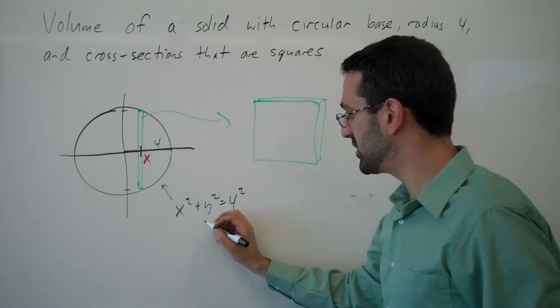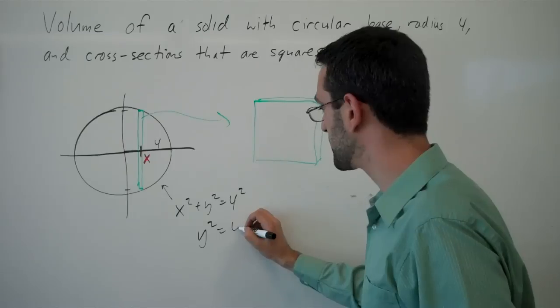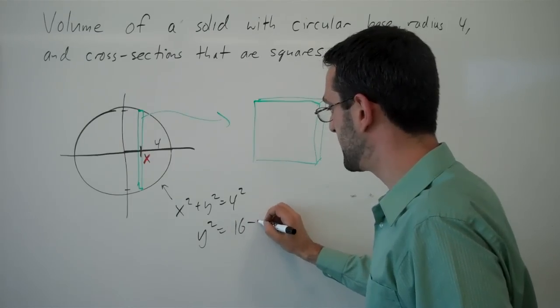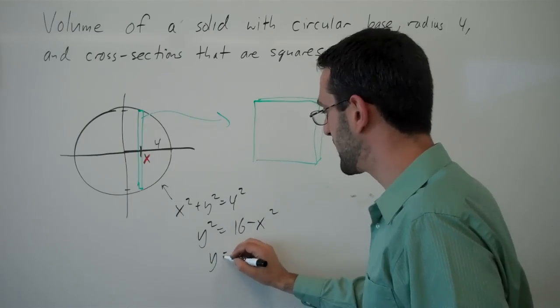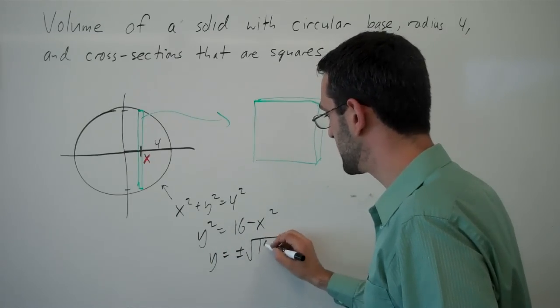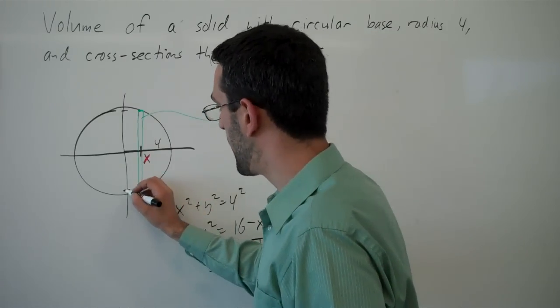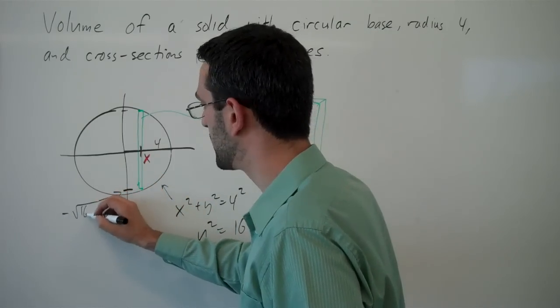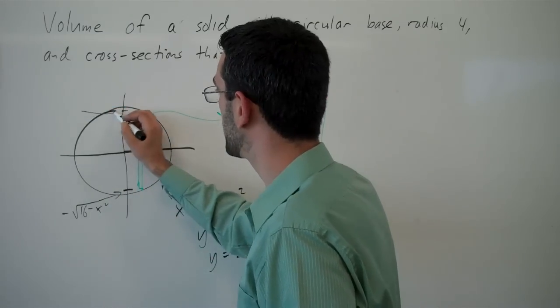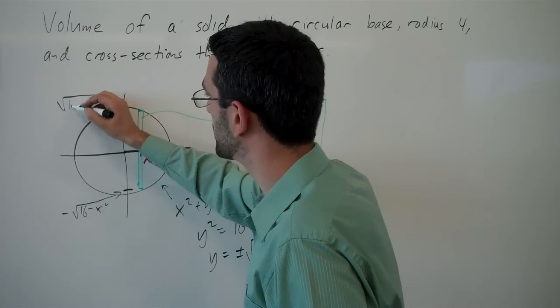So solving my equation here, y squared equals, let's go ahead and square that, 16 minus x squared. y is plus or minus root 16 minus x squared. And so my y value here is the negative square root, and the y value here is the positive square root.